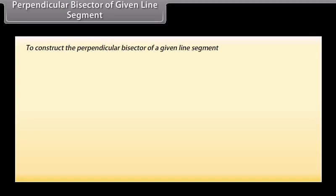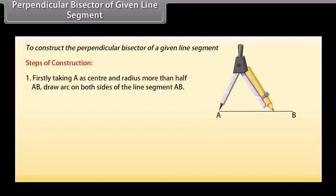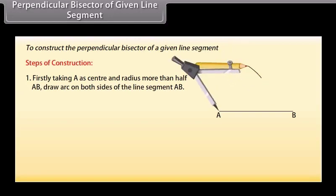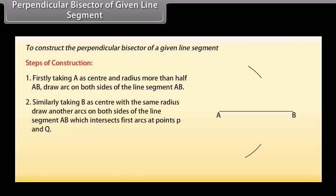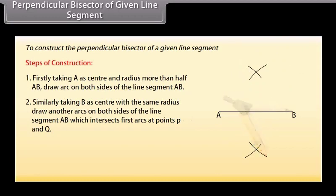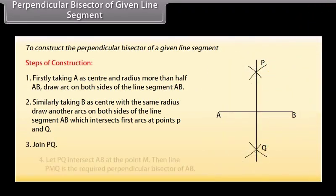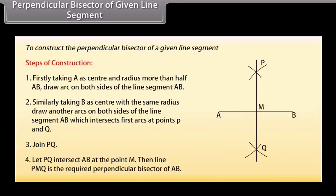Perpendicular bisector of a given line segment. Now, we will learn to construct the perpendicular bisector of a given line segment. Let us take a line segment AB. We want to construct its perpendicular bisector. Steps of construction: Taking A as center and radius more than half AB, draw arcs on both sides of the line segment AB. Similarly, taking B as center and with the same radius, draw arcs on both sides of AB, which intersect the first arcs at points P and Q. Now, join PQ. Let PQ intersect AB at point M. Then, line PMQ is the required perpendicular bisector of AB.